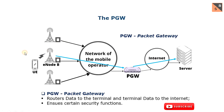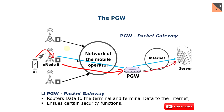And in the opposite direction, when I send a request from my cell phone or smartphone, it's the same thing: from the terminal to the eNB, from the eNB to the PGW, and from the PGW to the server, as demonstrated in this diagram.